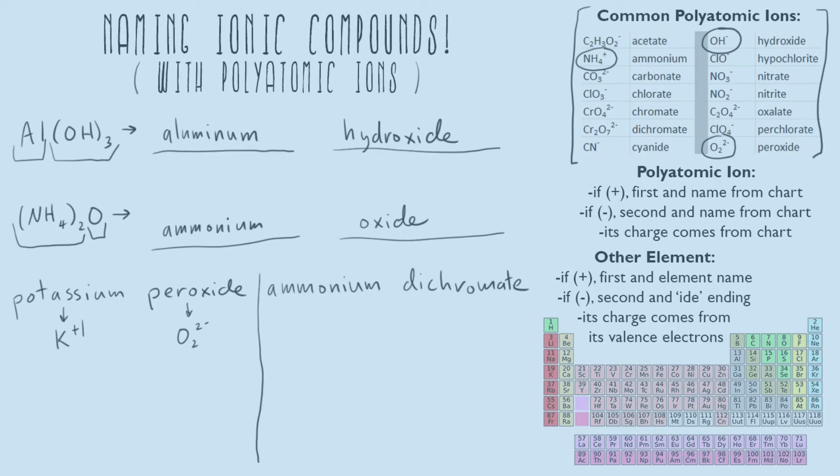We want to add something else that's more positive so we want to add a K one plus. Looking at the charges we have two positive charges, one from each K, and two negative charges from our one peroxide. We can write our chemical formula as K2O2.